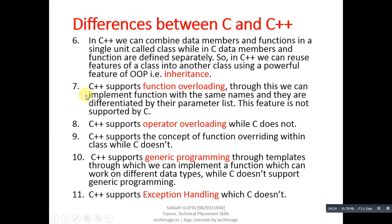C++ supports function overloading, which is not available in C. C++ also supports operator overloading, which is not supported by C. C++ supports the concept of function overriding within classes, while C does not. C++ supports generic programming, where functional classes can work on different data types, but C doesn't support generic programming. Finally, C++ supports exception handling, which C doesn't support.